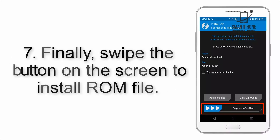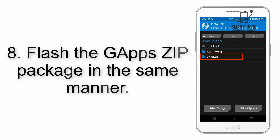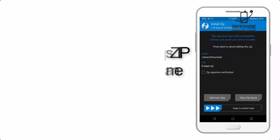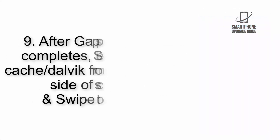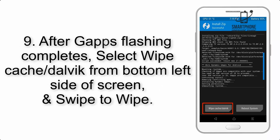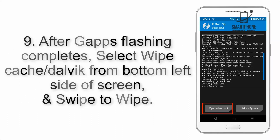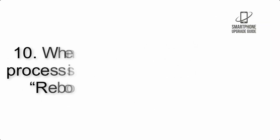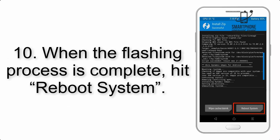Step 7: Swipe the button on screen to install the ROM file. Step 8: Flash the GApps zip package in the same manner. Step 9: After GApps flashing completes, select Wipe Cache and Dalvik from the bottom left side of the screen and swipe to wipe.